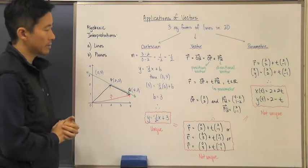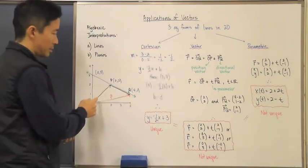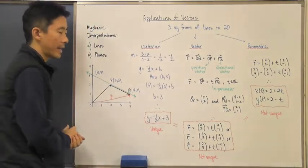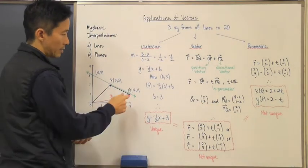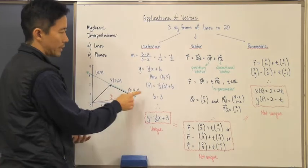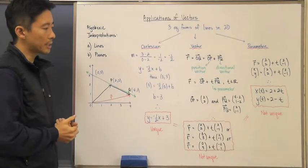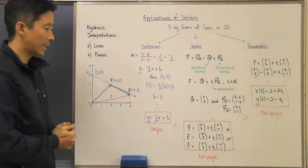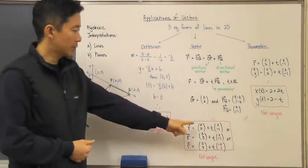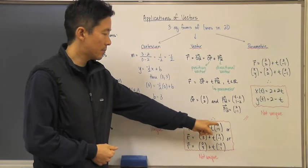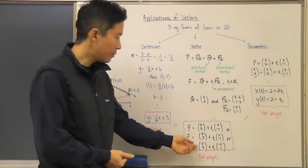Let's use a specific example. The position vector OP is (2, 2), and the directional vector PQ from P(2, 2) to Q(4, 1) is (4 − 2, 1 − 2) = (2, −1). So the vector equation of this line is r = (2, 2) + t(2, −1), which is the position vector plus t times the directional vector.